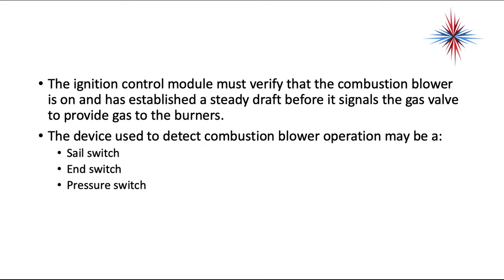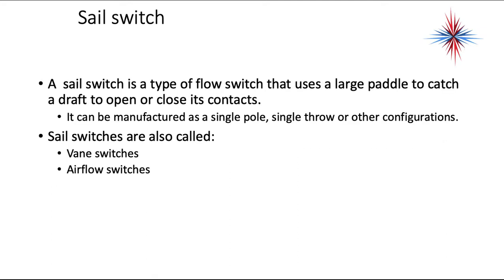The ignition control module must verify that the combustion blower is on and has established a steady draft before it signals the gas valve to provide gas to the burners. The device used to detect combustion blower operation might be a sail switch, an end switch, or a pressure switch.